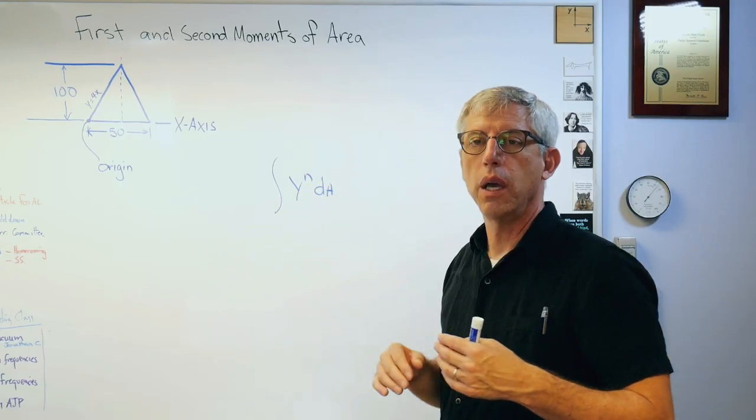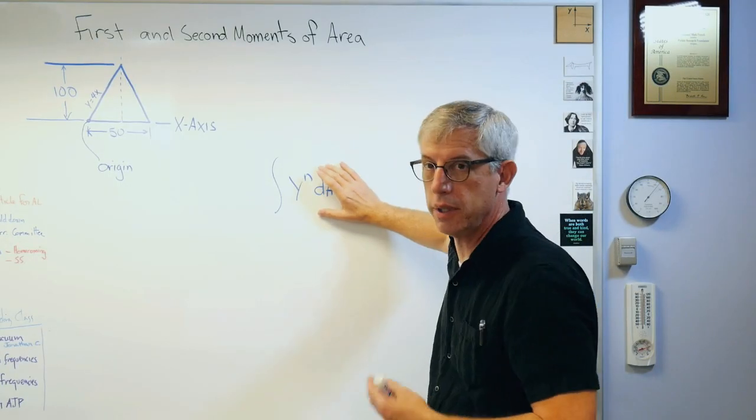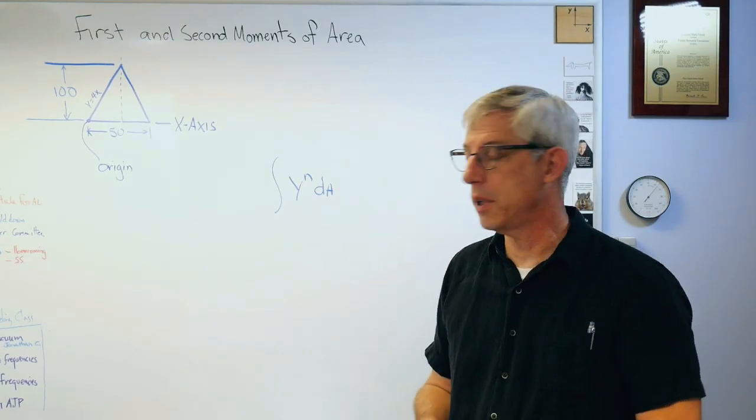That n means a power at which you take this distance to. So if n is 1, you have a first moment of area, and if it's 2, you have a second moment of area, and so on. In mechanics we mostly just use first and second moments.